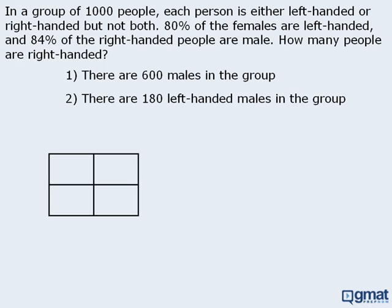Let's reserve the top row for the females in the group, and we'll reserve the bottom row for the males. Next we'll reserve the left-hand column for the left-handed people, and we'll reserve the right-hand column for the right-handed people.